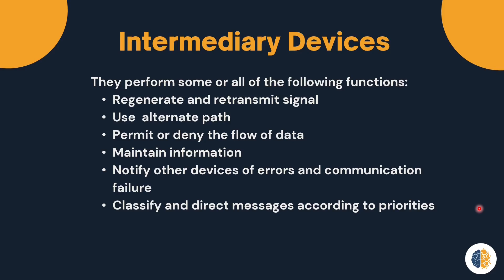Intermediary devices perform some or all of the following functions. First, regenerate and re-transmit signals, especially if the signal is weak. Second, use an alternate path when there is a link failure. Third, permit or deny the flow of data based on security settings.